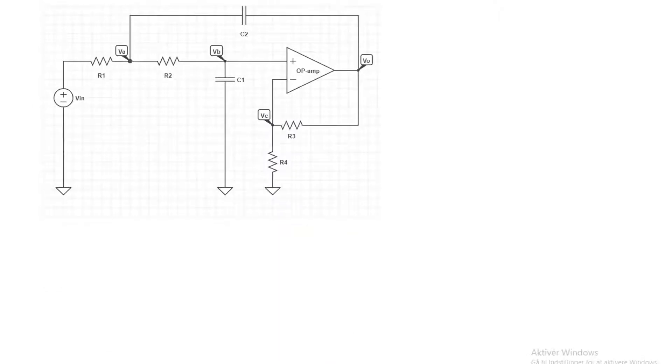This is a Sallen-Key second order low pass filter. In order to find the transfer function we first replace the capacitors with the impedance. The impedance looks like this, it's a rectangle with size 1 over s times the capacitor.